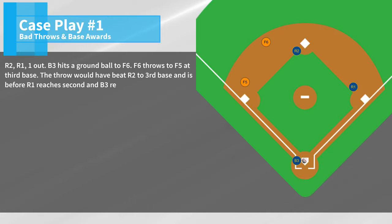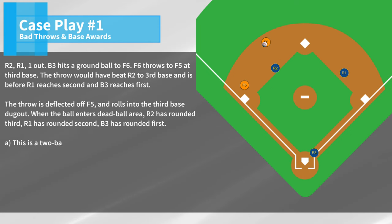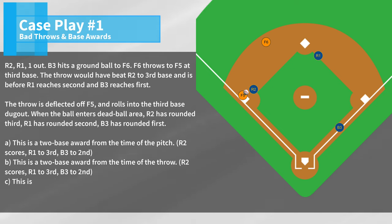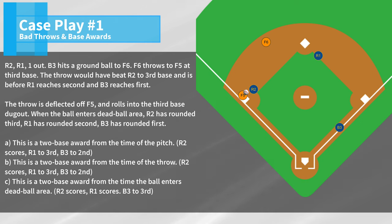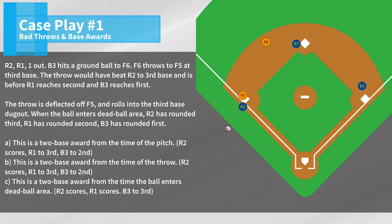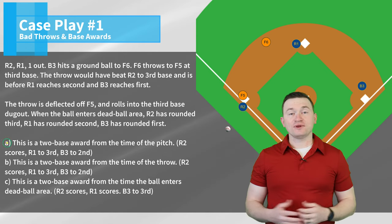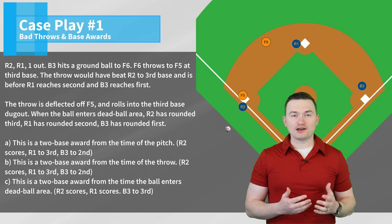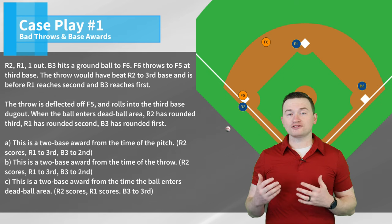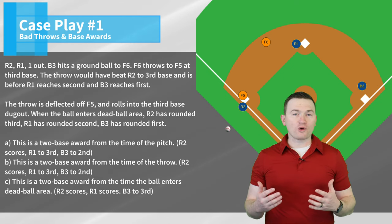Case play number one: R2, R1, and one out. B3 hits a ground ball to F6. F6 throws to F5 at third base. The throw would have beat R2 to third base and is before R1 reaches second and B3 reaches first. The throw is deflected off F5 and rolls into the third base dugout. When the ball enters dead ball area, R2 has rounded third, R1 has rounded second, B3 has rounded first. The correct answer is A — this is a two base award from the time of the pitch. This throw from the shortstop to the third baseman is the first play by an infielder and since all runners, including the batter runner, have not yet advanced one base safely, this award goes back to the time of the pitch.